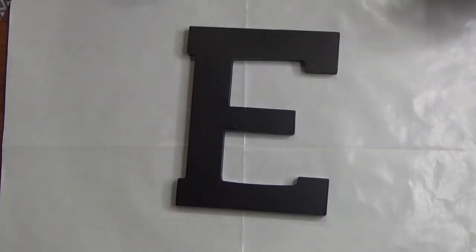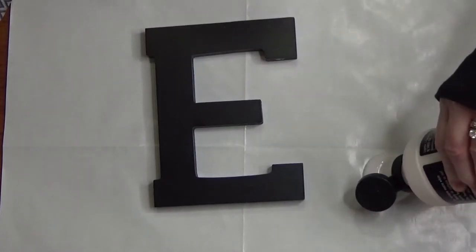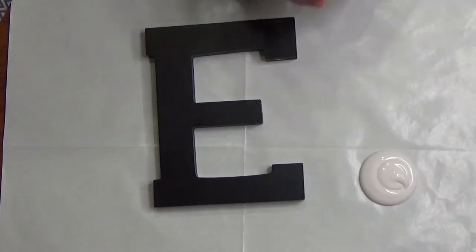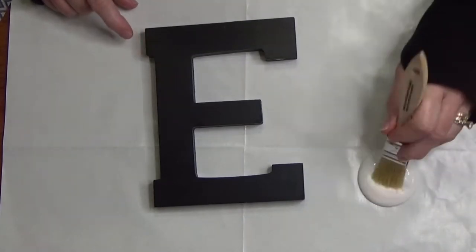We are down at the craft table and today we're gonna be doing the letter E in our Hope Series. If you didn't see the other videos in this Hope Series, check them out. They're pretty cool. So now we're just gonna get some layers of gesso on here.